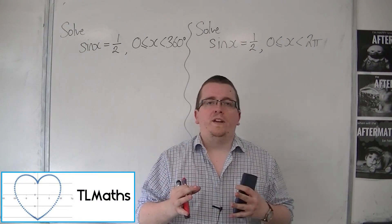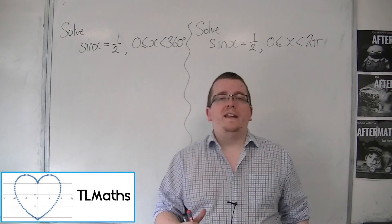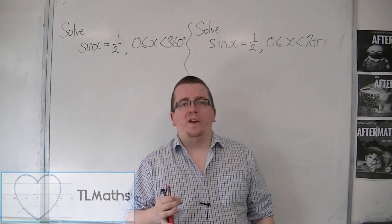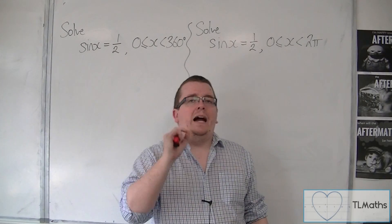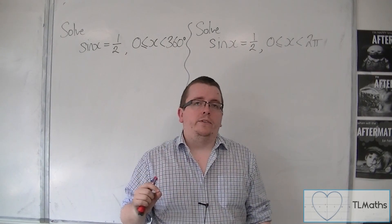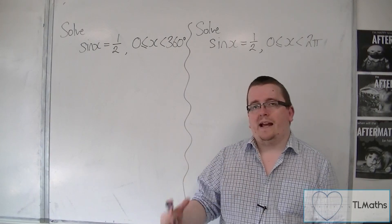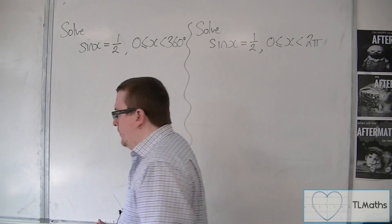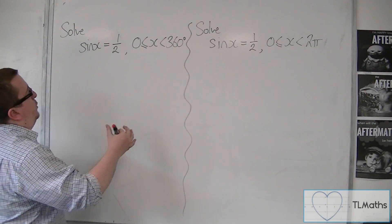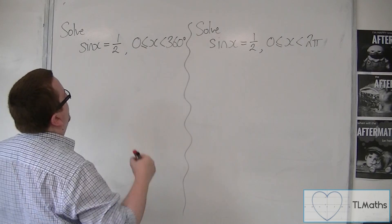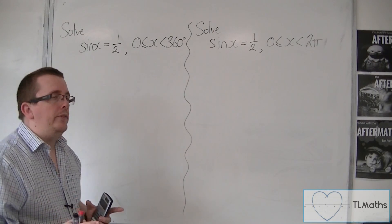In this video, I'm going to solve sine x equals one half. We're going to do it in degrees and then radians, so you can see exactly how this changes. First of all, sine x equals one half between 0 and 360 degrees.